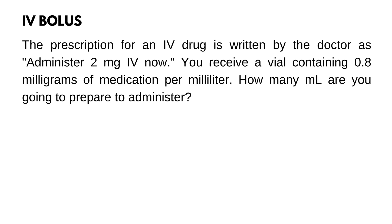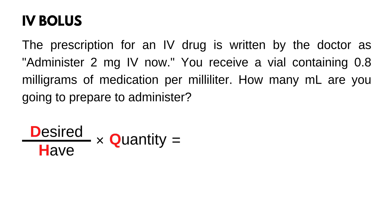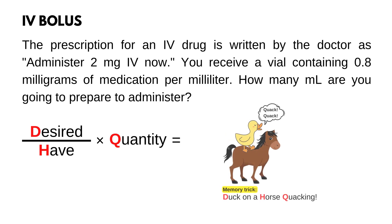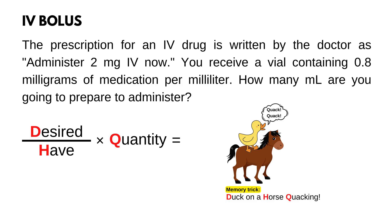Start by using the formula: desired over half times quantity. Desired is the dose that the provider ordered for the patient, half is what you have on hand, and quantity can be capsules, tablets, or milliliters. There is a memory trick to remember this formula — just imagine a duck on a horse quacking. Now let's answer it.